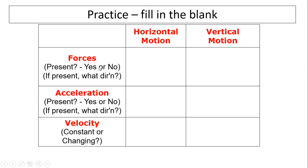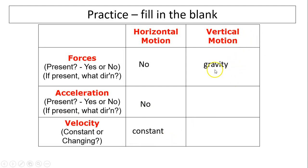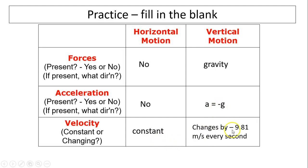Practice fill in the blank: Is there a force present in the horizontal direction? No — therefore no acceleration, and velocity is constant. In vertical motion, force is gravity downward. Make sure to indicate downward. Acceleration is negative g. Velocity is changing by -9.81 m/s every second — decreasing as you go up, increasing as you come down.